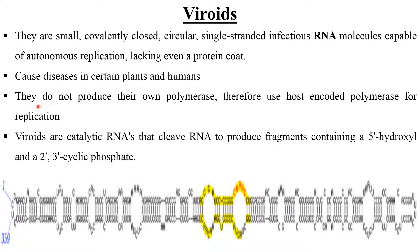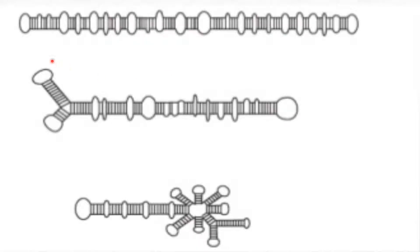Viroids do not produce their own polymerase; therefore they use host-encoded polymerase for replication. Viroids are catalytic RNAs that cleave RNA to produce fragments containing a 5' hydroxyl and a 2'-3' cyclic phosphate. The movement of viroids in the case of Pospiviroidae is intracellular, cell-to-cell through plasmodesmata, and long-distance through the phloem.